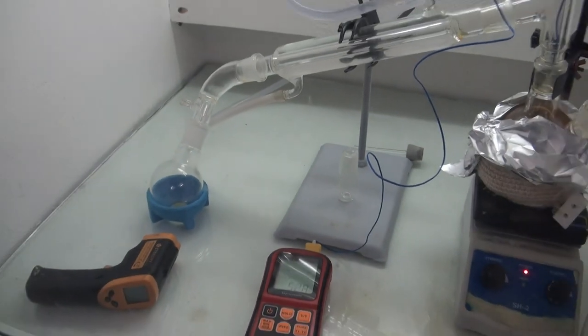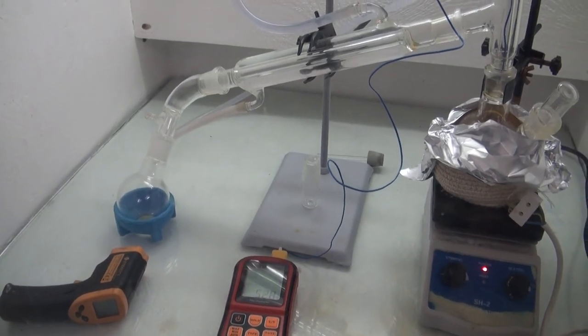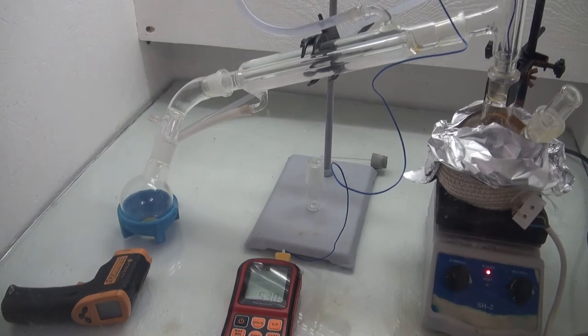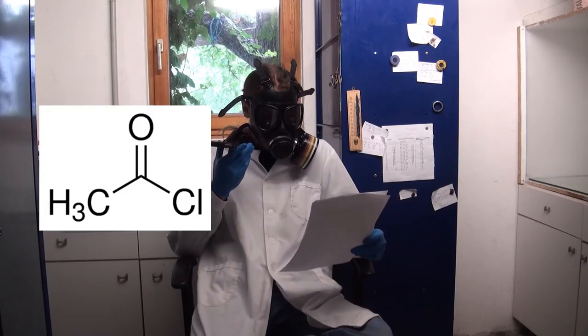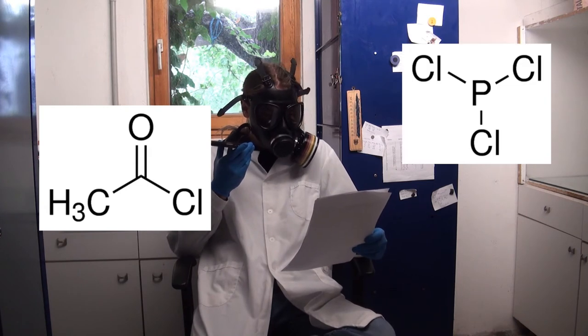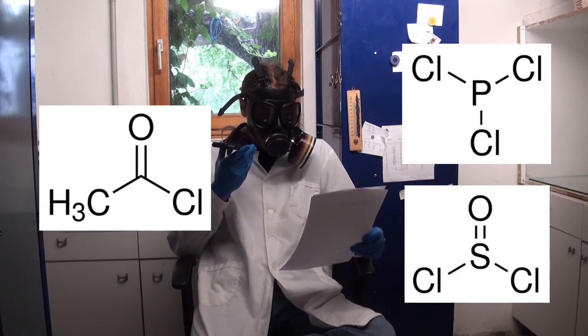Interestingly enough the first distillate came over at about 50°C, which could mean that I chlorinated it strong enough to make acetyl chloride. This usually needs very strong chlorinating agents like phosphorus trichloride or thionyl chloride.